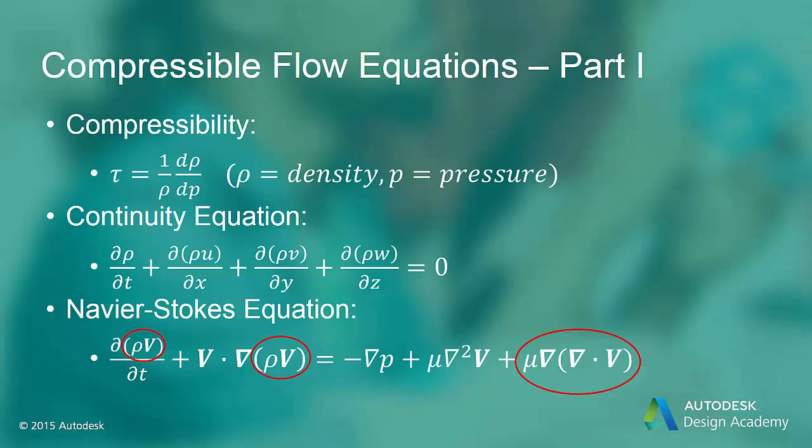For compressible flow, we cannot assume that density is constant. So the continuity equation for compressible flow allows for variable density. The Navier-Stokes equations must also allow for a variable density. So the complexity of the incompressible Navier-Stokes equations is magnified now with the variable density terms and an additional stress term.